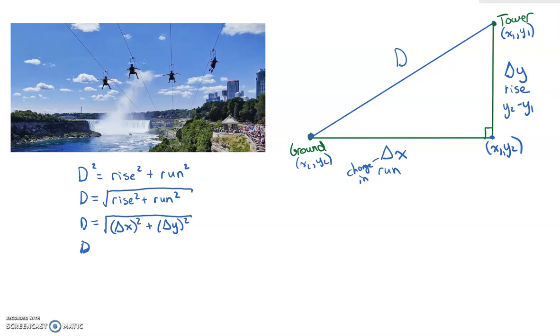Likewise, in terms of the run, we could say it's the second x value, this one right here, minus the first x value, x1. And so rewriting this equation one other way gives us this: D = √[(x2 - x1)² + (y2 - y1)²]. And that's the equation we're going to use to solve the distance of line segments in this lesson.